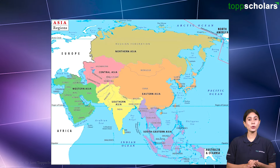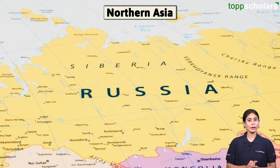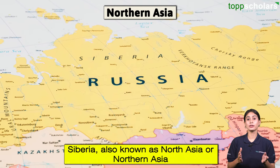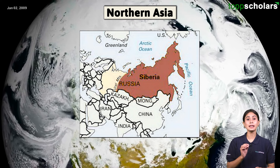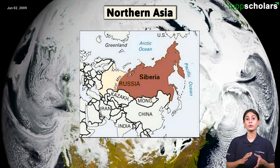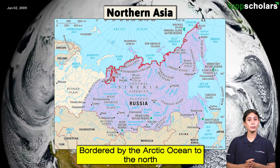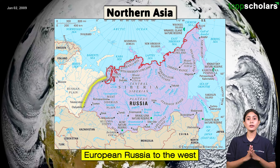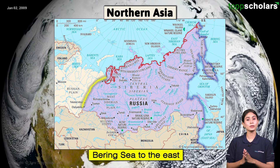First, let us know about Northern Asia. Siberia, also known as North Asia or Northern Asia, is a 13 million square kilometer area in the Ural Mountains, Russia. It is bordered by the Arctic Ocean to the north, European Russia to the west, and the Bering Sea to the east.